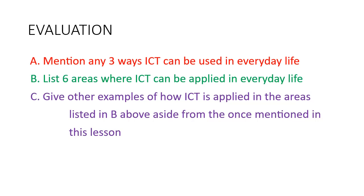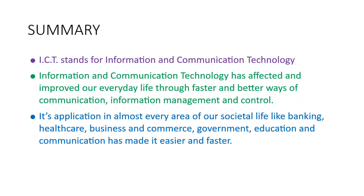I'd like you to look at yourself and see how much you have achieved from this lesson. You should be able to answer: mention any three ways ICT can be used in our everyday life; list six areas where ICT can be applied in everyday life; and as an assignment, give other examples of how ICT is applied in the areas listed above, different from the ones mentioned in the lesson. ICT stands for Information and Communication Technology and has improved our everyday life through faster and better communication, information management, and control.